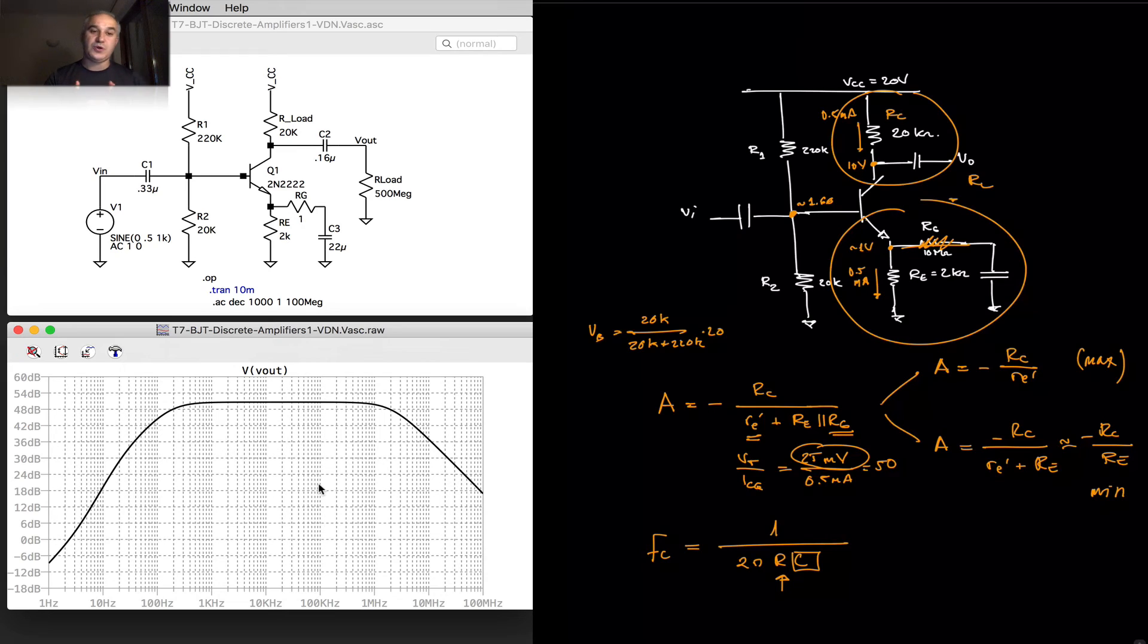Now, this is the AC response. If we do a transient analysis, we can see that at these voltage levels, we are going to have saturation, etc., because we don't have that much voltage swing. So, let's actually look at that.